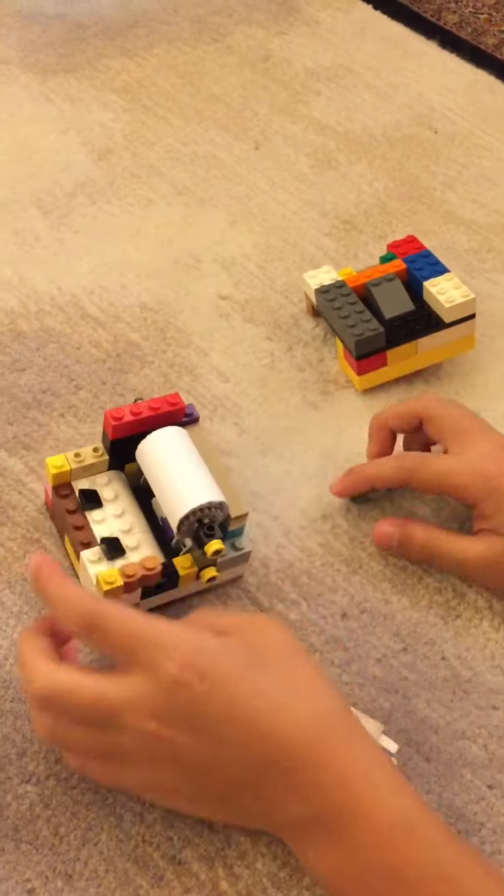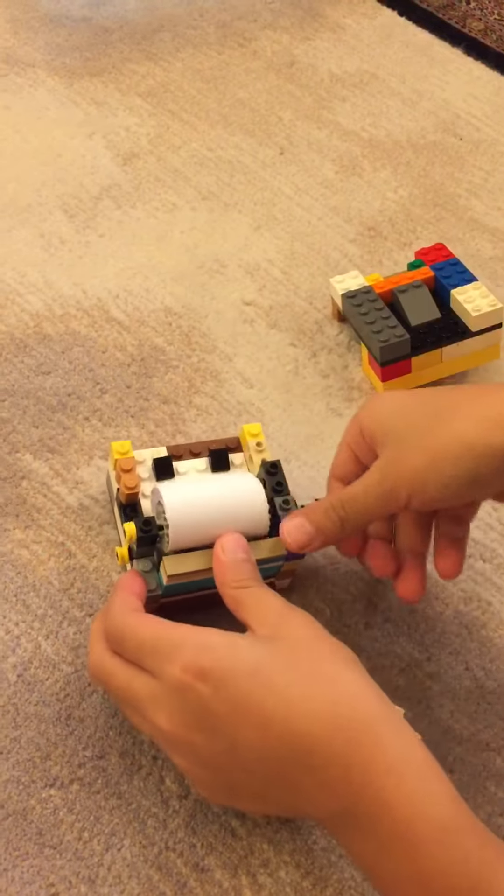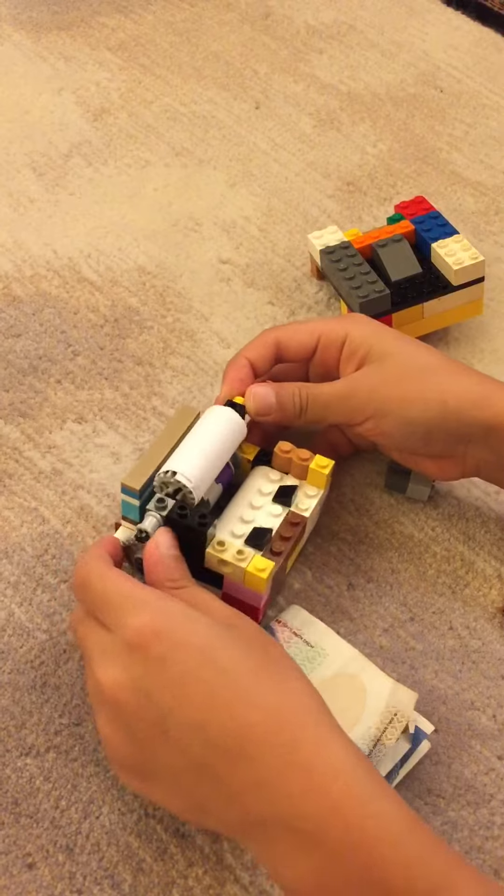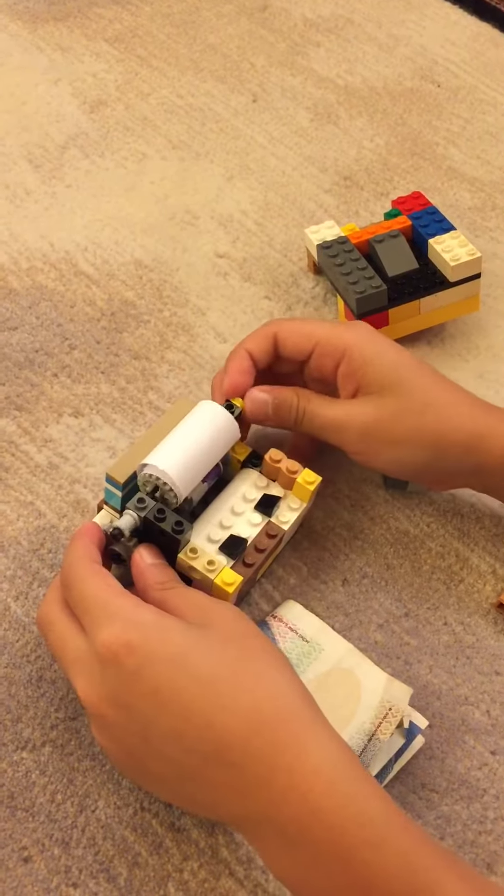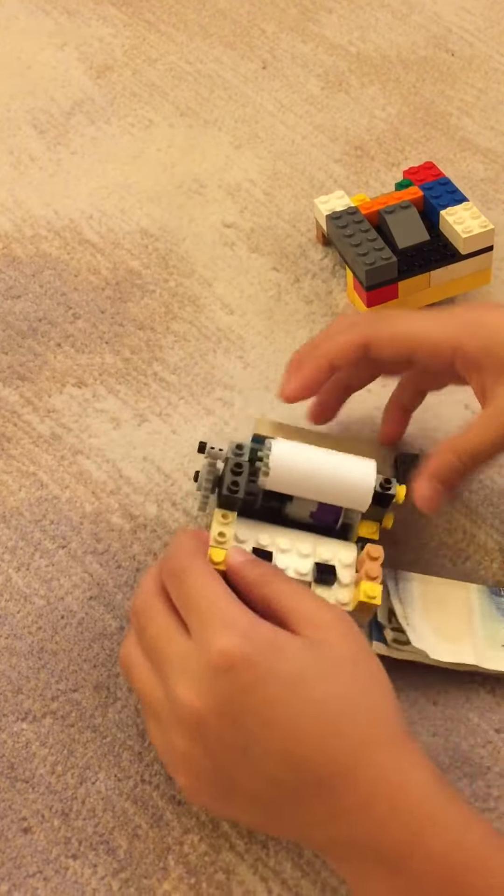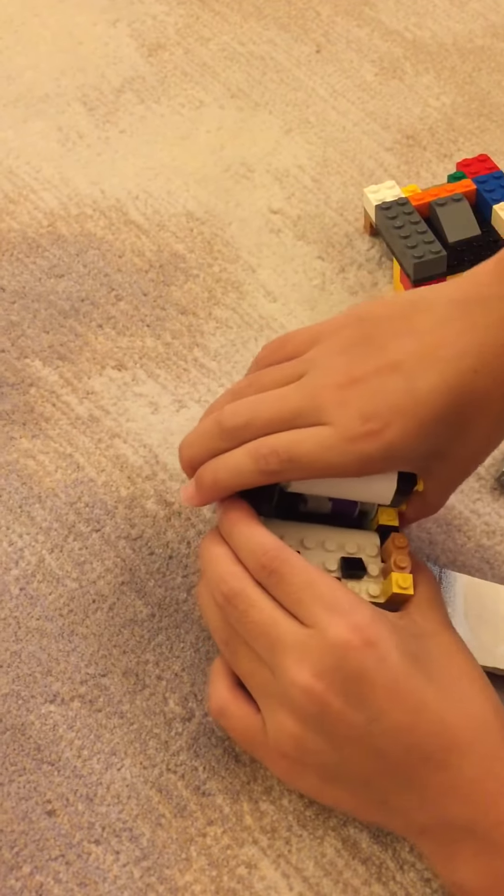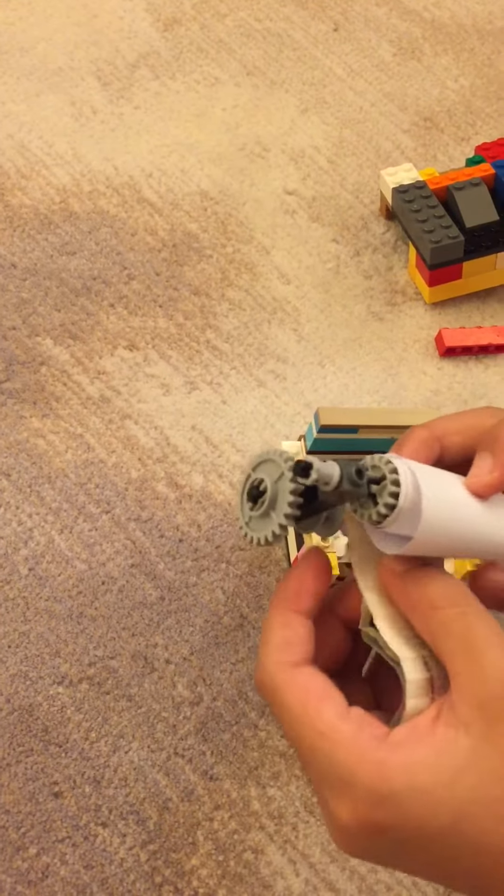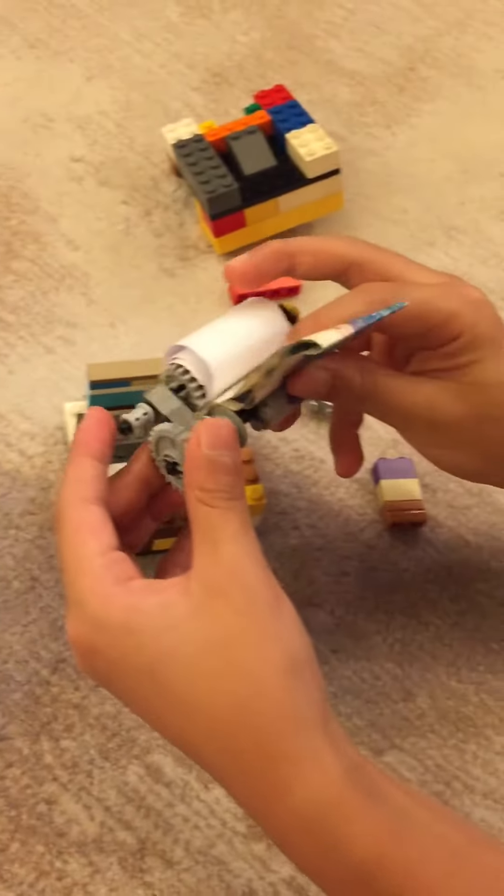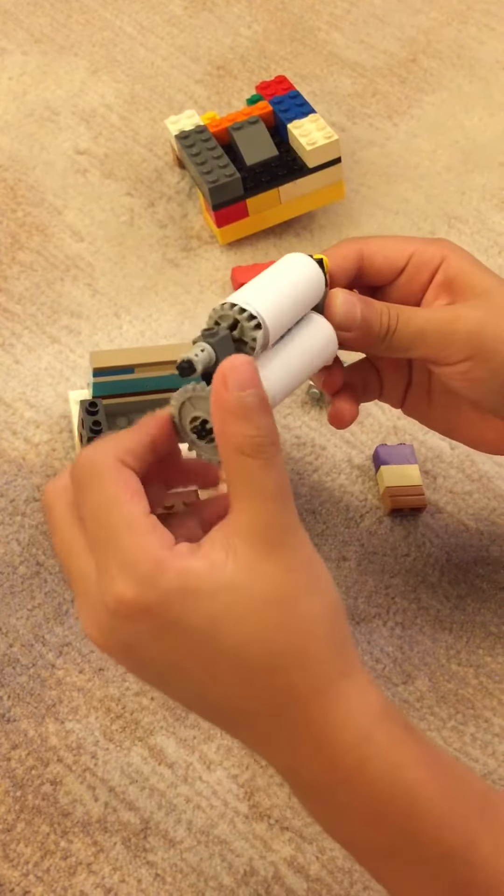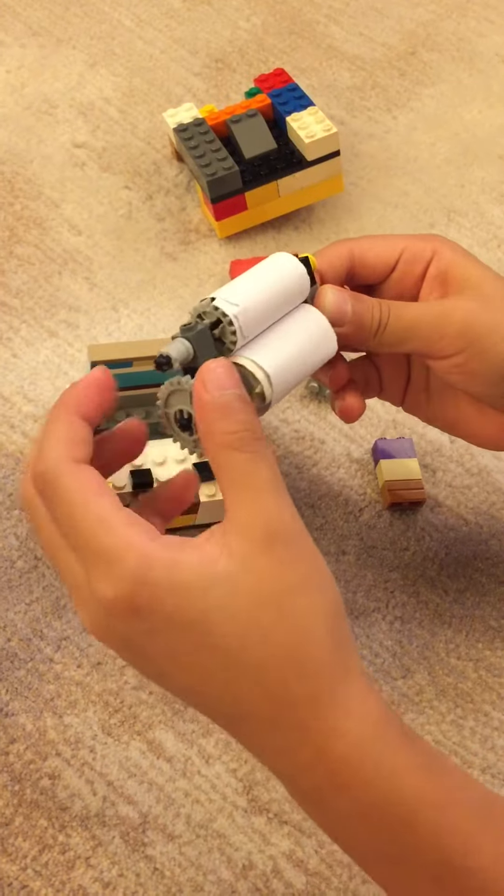So let me show you the mechanism. This is the mechanism of the deposit. So first you get your bill as you can see and you stick it in, and as you roll the gears the bill gets rolled up with the paper which collects it.